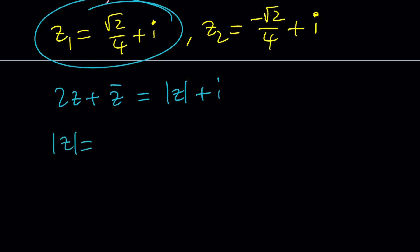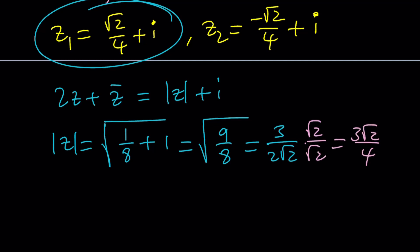Let's start by finding the absolute value of Z. It's the square root of A squared plus B squared. If you square root 2 over 4 you're going to get 2 over 16 which is 1 over 8 plus 1 squared which is 1. That gives you square root of 9 over 8 which can be written as 3 over 2 root 2. After multiplying by the conjugates that should be 3 root 2 over 4. You're going to add I to it so we get 3 root 2 over 4 plus I on the right hand side.